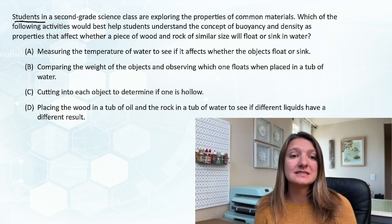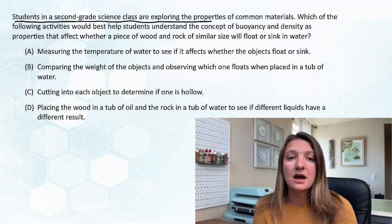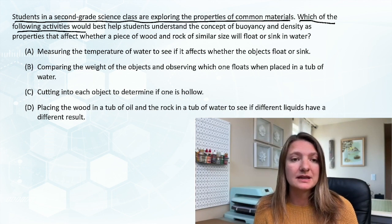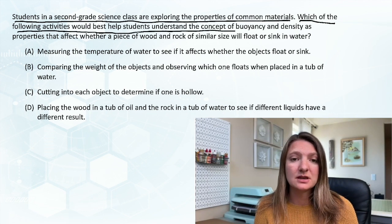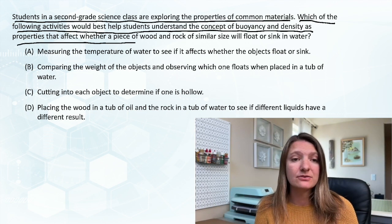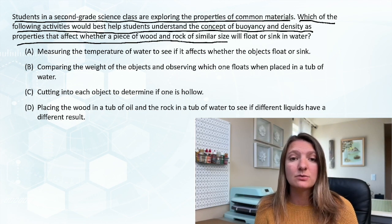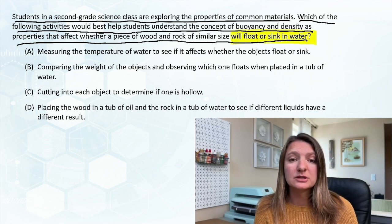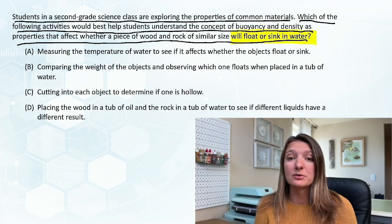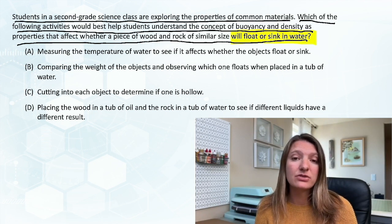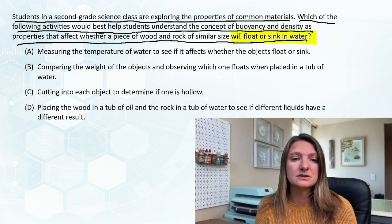Question two: students in a second grade science class are exploring the properties of common materials. Which of the following activities would best help students understand the concept of buoyancy and density as properties that affect whether a piece of wood and a rock of similar size will float or sink in water? So here we are really trying to identify whether it will float or sink - that is buoyancy. And the density is how thick or how dense that material is.